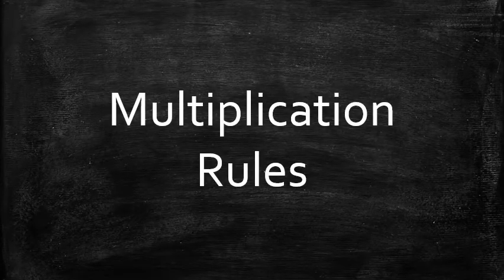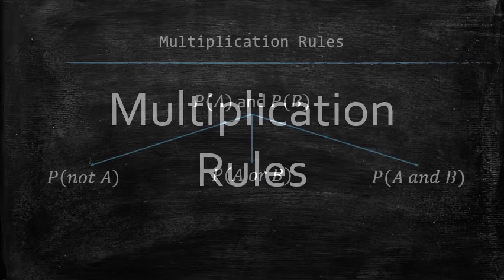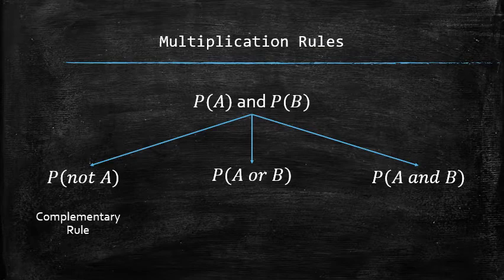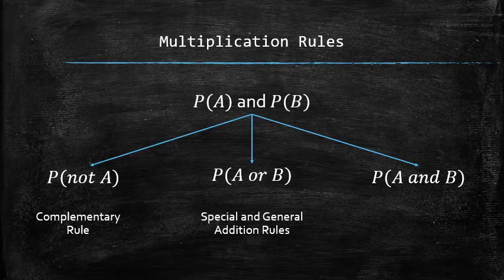Next, we will discuss the formula for computing the conditional probability and its applications. Previously, we set the goal to be able to find the probabilities of compound events when the probabilities of the original events are given. For finding the probability of the complementary event, we developed the complementary rule. For finding the probability of the union of two events, we developed the special and general addition rules. The next goal is to develop the rule for finding the probability of the intersection of two events.